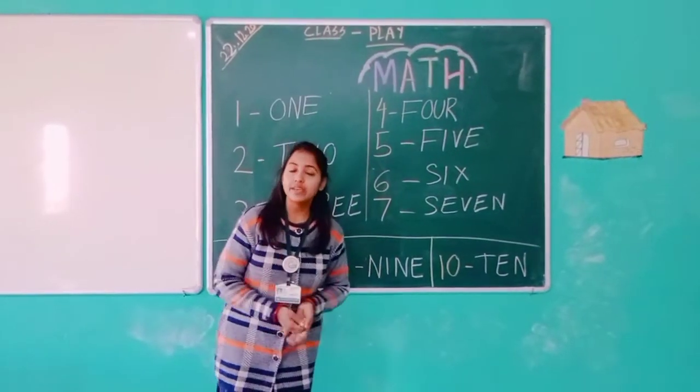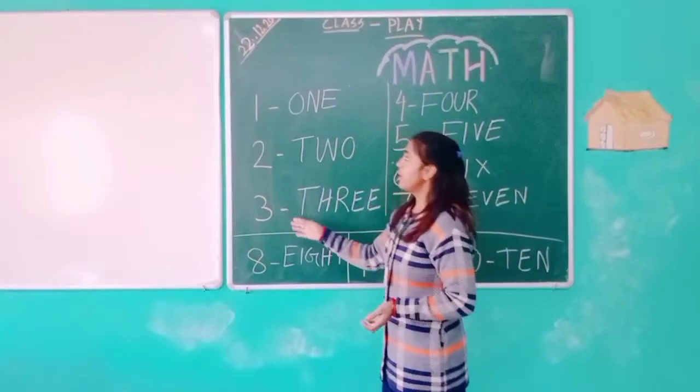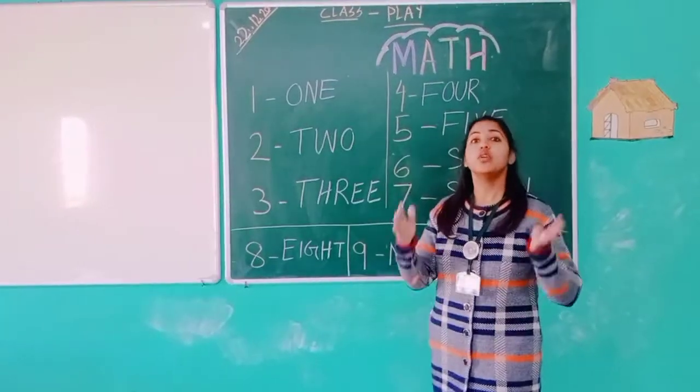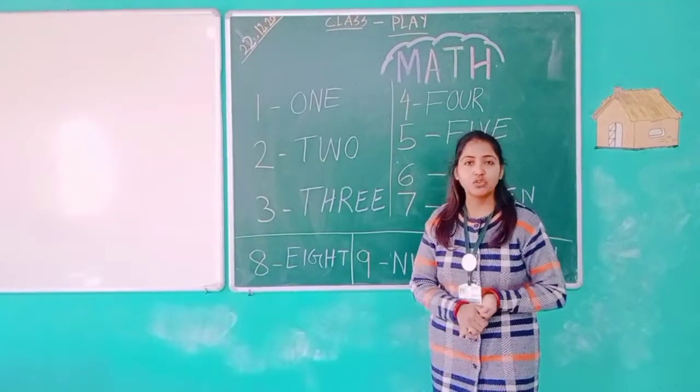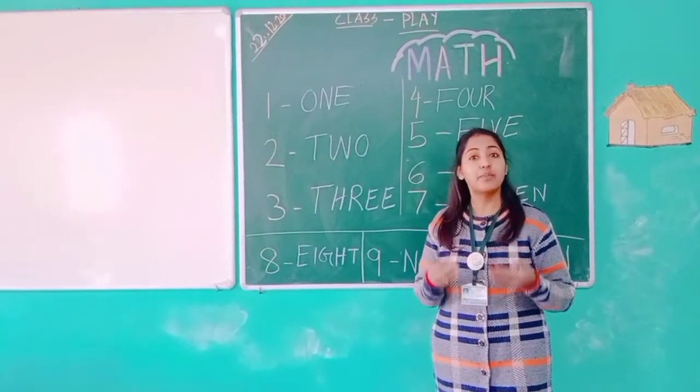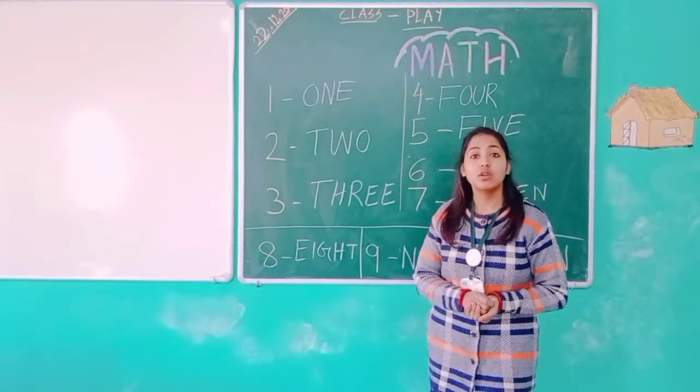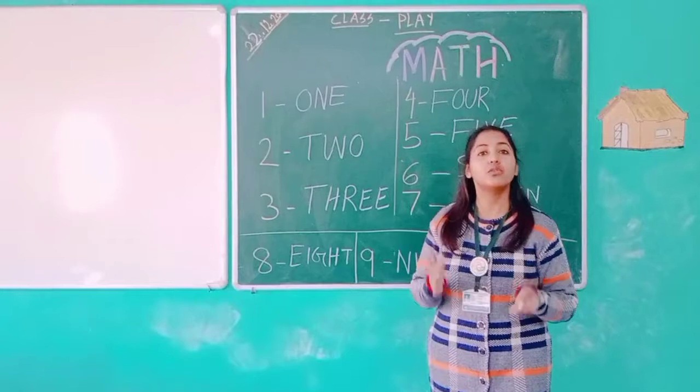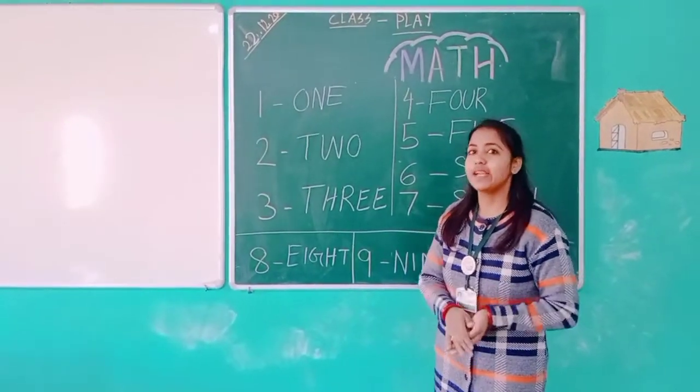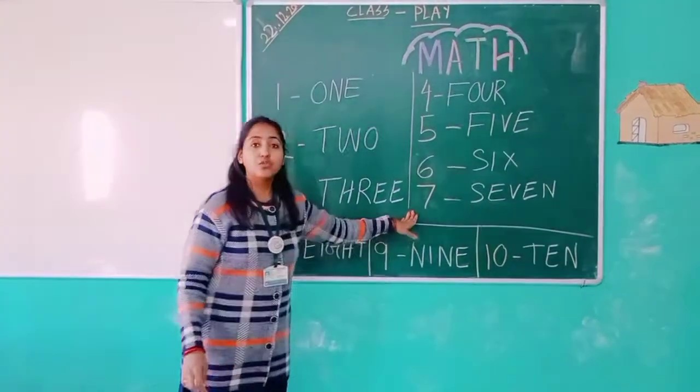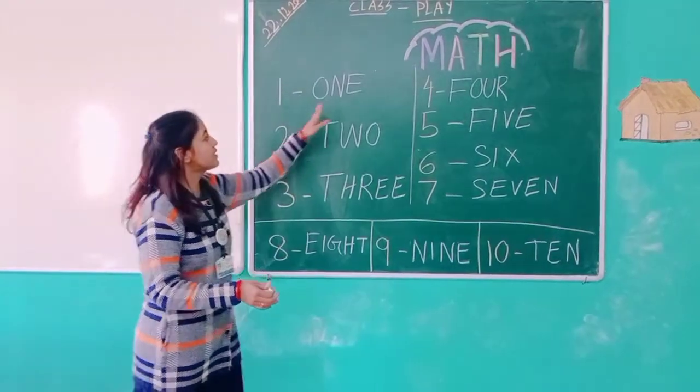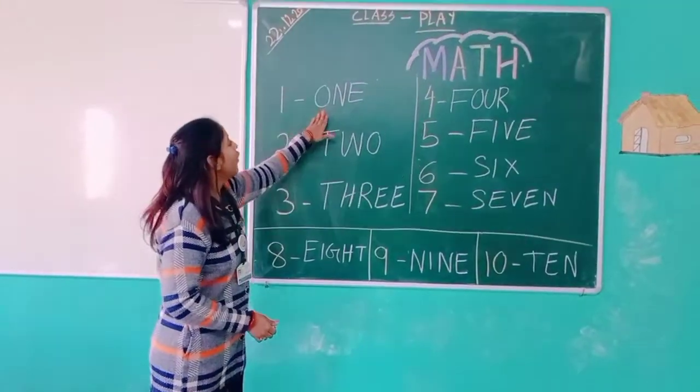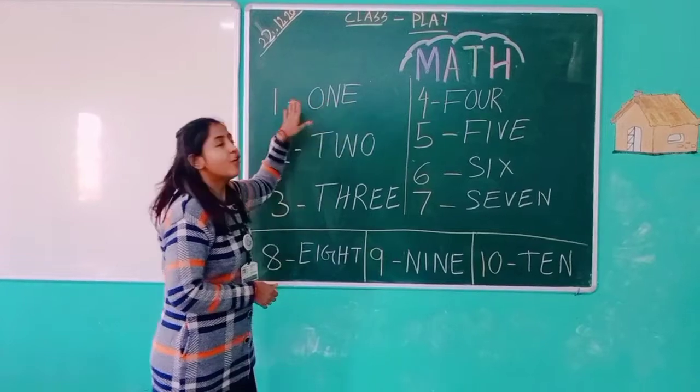Children, you have already learned the numbers from 1 to 10, but you don't know how to spell them. Let's start to learn how to spell them. Just like that: O-N-E, 1.